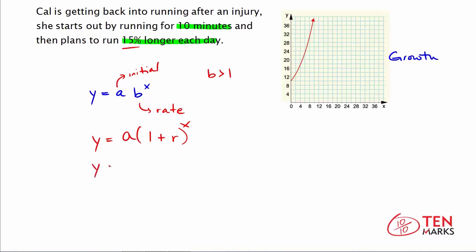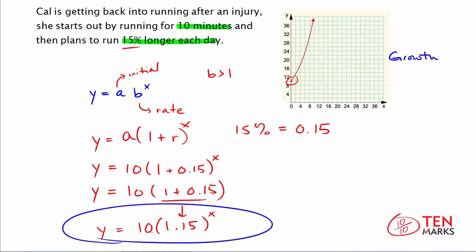So let's substitute in what we know. The initial value is the amount of time she starts running. When x equals 0, y equals 10. We can see that right there on a graph. And so she starts with 10 minute runs. Then she's going to increase that by 15% each day. And when you're doing problems like this, you want to rewrite the percentage as a decimal. So 15% being 0.15. So plus 0.15 raised to the power of x. Simplify the terms inside the parentheses and you get 10 times 1 plus 0.15. Or, this turns into 1.15. Put that in parentheses, raise that to the power of x, and then include the initial value of 10. Now you have your formula. Y equals 10 times the quantity 1.15 to the power of x.